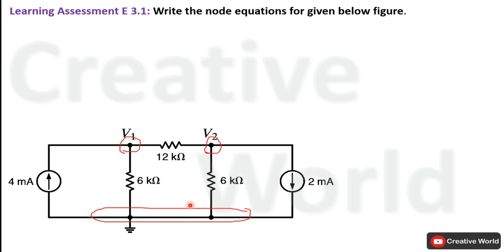All branch currents as well as voltages on other nodes will be taken with reference to this ground node. Two nodes remain other than the ground node, so there will be two node equations. We will solve this problem with these two nodes to find the two node equations.